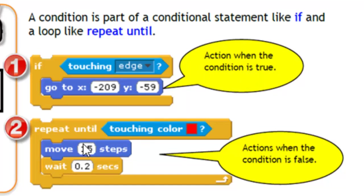However, for the second type, for the repeat until statement, repeat until touching edge, or touching color. If it has not touched the red color, it should continue to move 15 steps, and wait 0.2 seconds, and keep coming back to this question to test if it's true. So, for these two actions here, move 15 steps, and wait 0.2 seconds, it is the action to take when the condition for this question is false, or the answer to this question is no. Then you move 15 steps and wait 0.2 seconds.